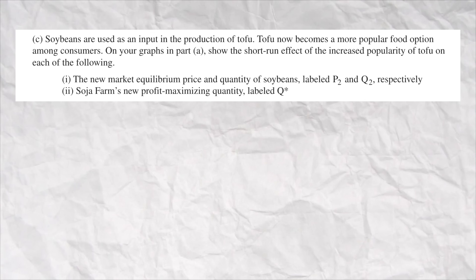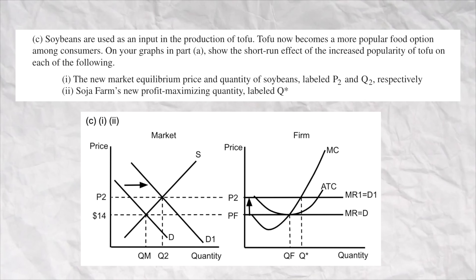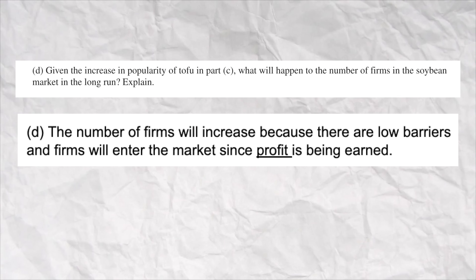In part C, they said there's an increase in the demand for tofu, which they need soybeans for, so there's going to be an increase in demand for soybeans. You have to draw that on the graph you drew in A — draw a new market graph of the increase in demand. The price and quantity went up, P2 and Q2, and the individual firm takes that price and now produces more. I hope you labeled a new quantity for the firm Q star. In part D, you had to explain what's going to happen in the long run. Since firms are now making profit, other firms are going to enter because there's low barriers.